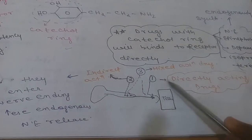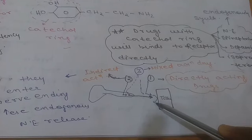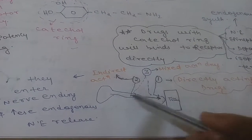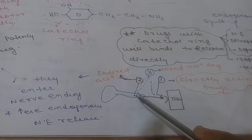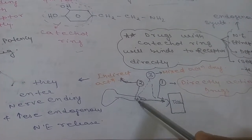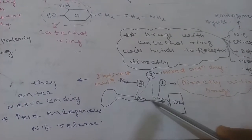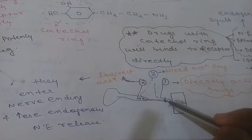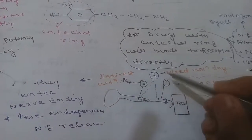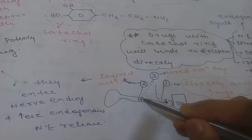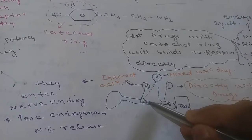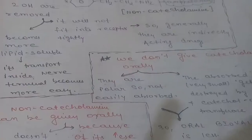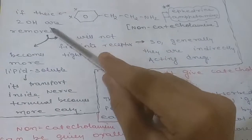Directly acting drugs bind directly to the receptor present at the tissue. Indirect acting drugs enter the nerve terminal and cause the release of endogenous norepinephrine from there. Mixed action drugs can both increase endogenous norepinephrine secretion and bind to the receptor directly.